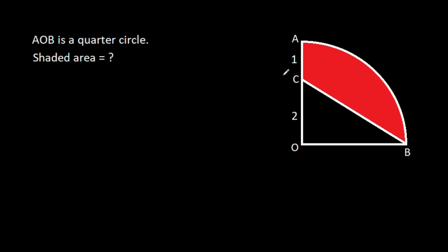In this video, we have been given that AOB is a quarter circle, and AC is one, OC is two, then we have to find shaded area.